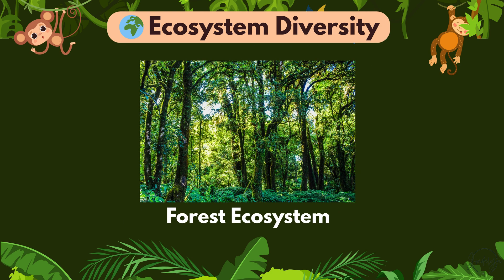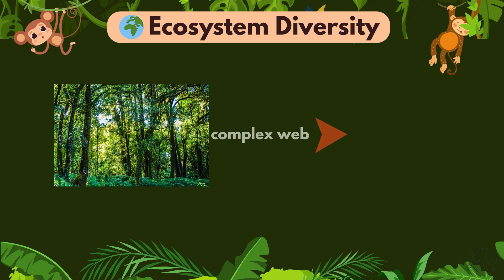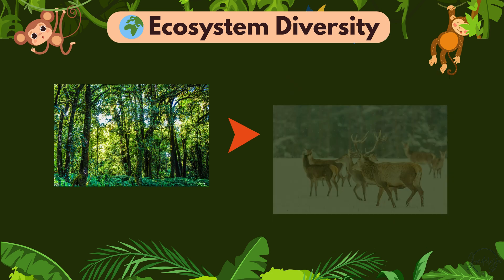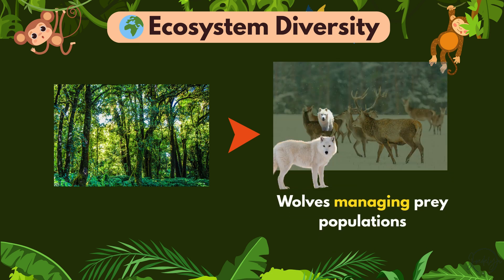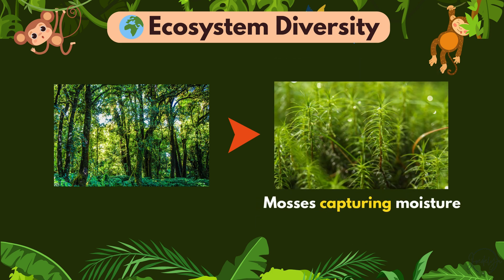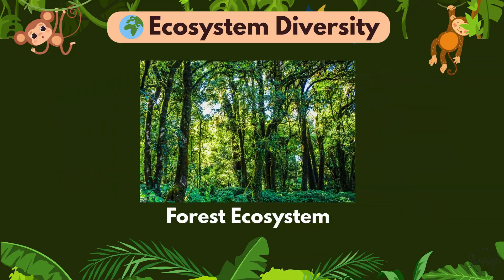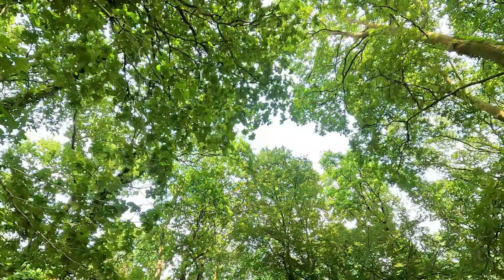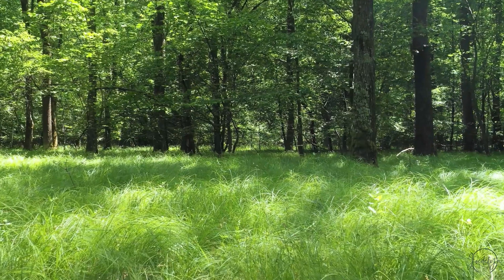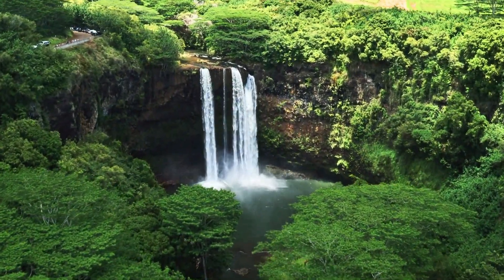Take a forest ecosystem. It's not just trees and animals. It's a complex web of owls hunting at night, wolves managing prey populations, fungi and mushrooms breaking down dead wood, mosses capturing moisture, and millions of invisible microbes in the soil recycling nutrients. Each layer of this ecosystem, from the canopy to the forest floor, works together to keep the system balanced and productive.